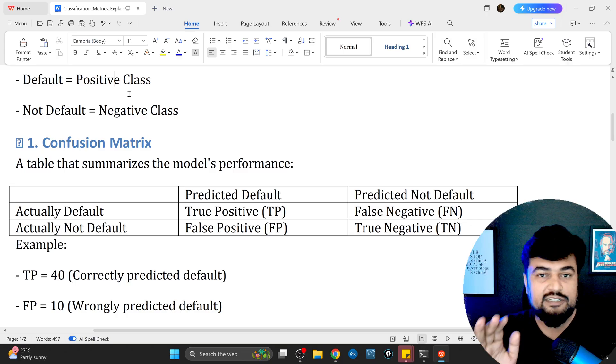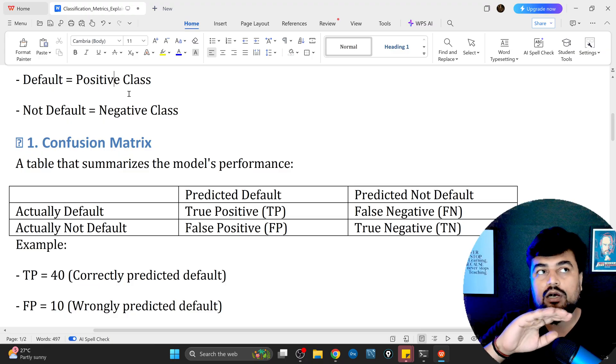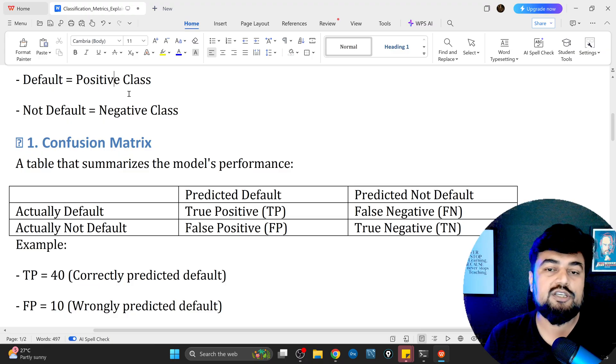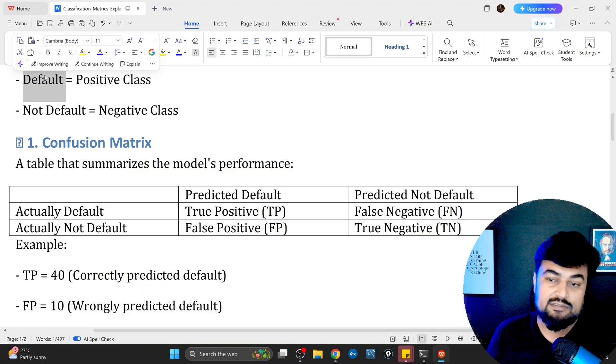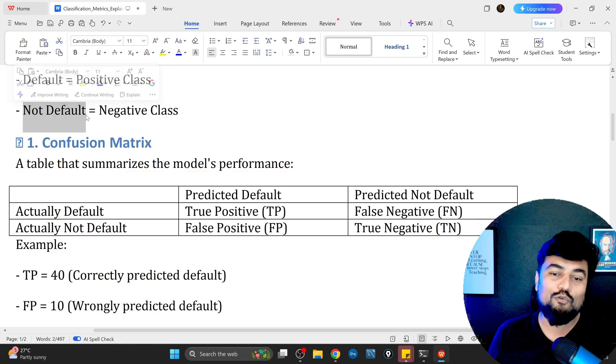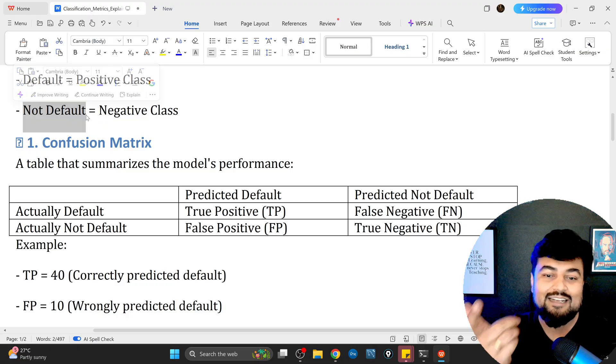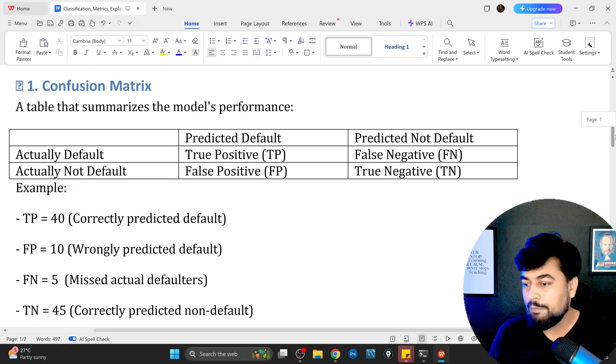Default means positive class. Positive does not mean it's a good class. If you go to a doctor and they say you are tested positive for COVID, that is not a good thing. Similarly, you are tested positive for a default. Similarly, negative means non-default, just like COVID. When the doctor says you are negative, it's a good thing.